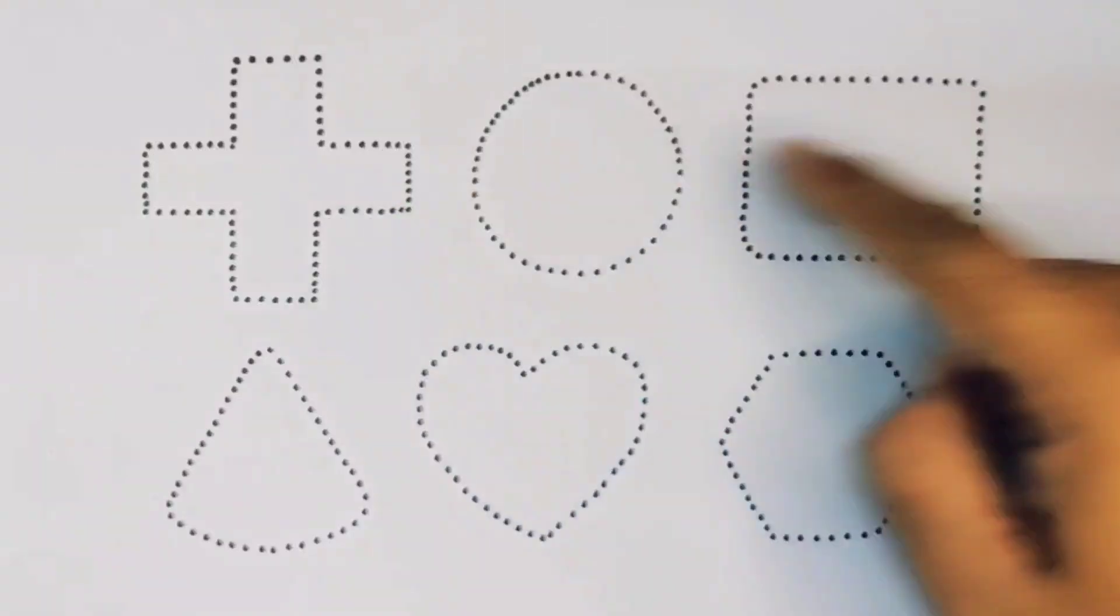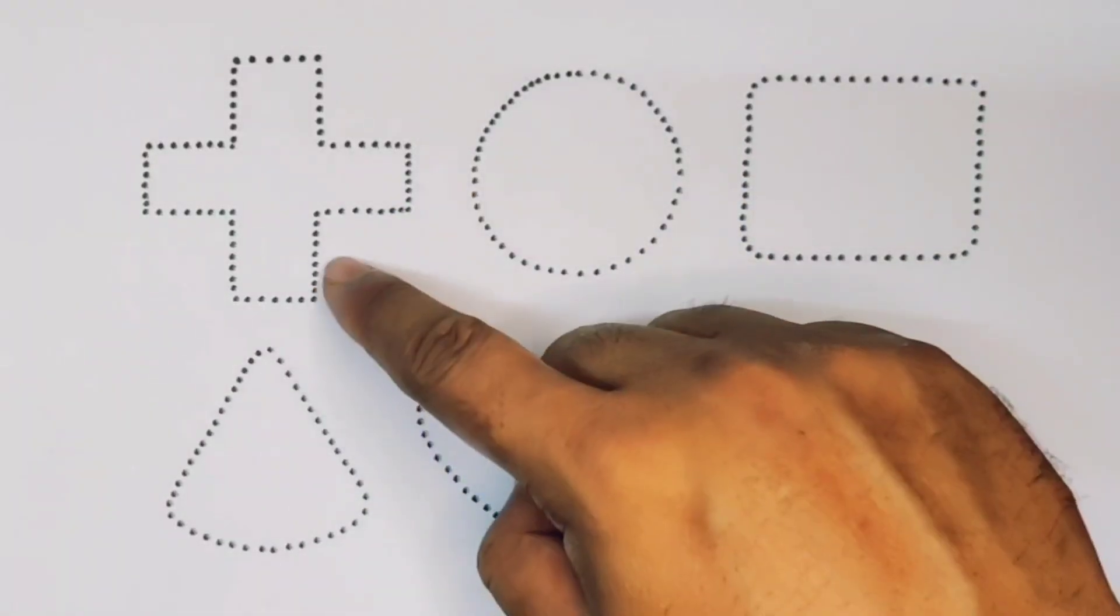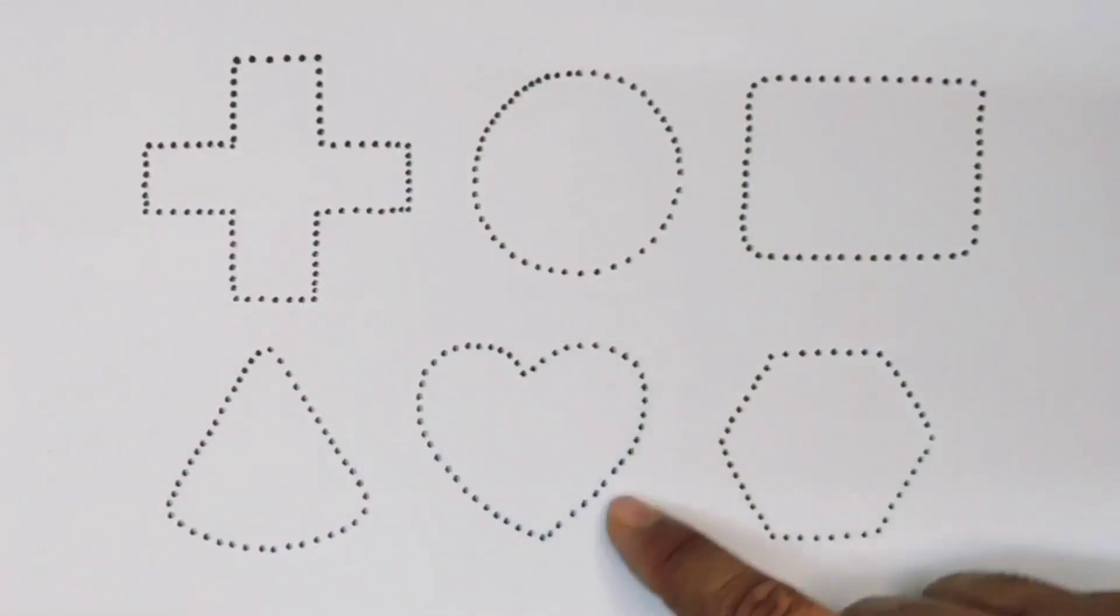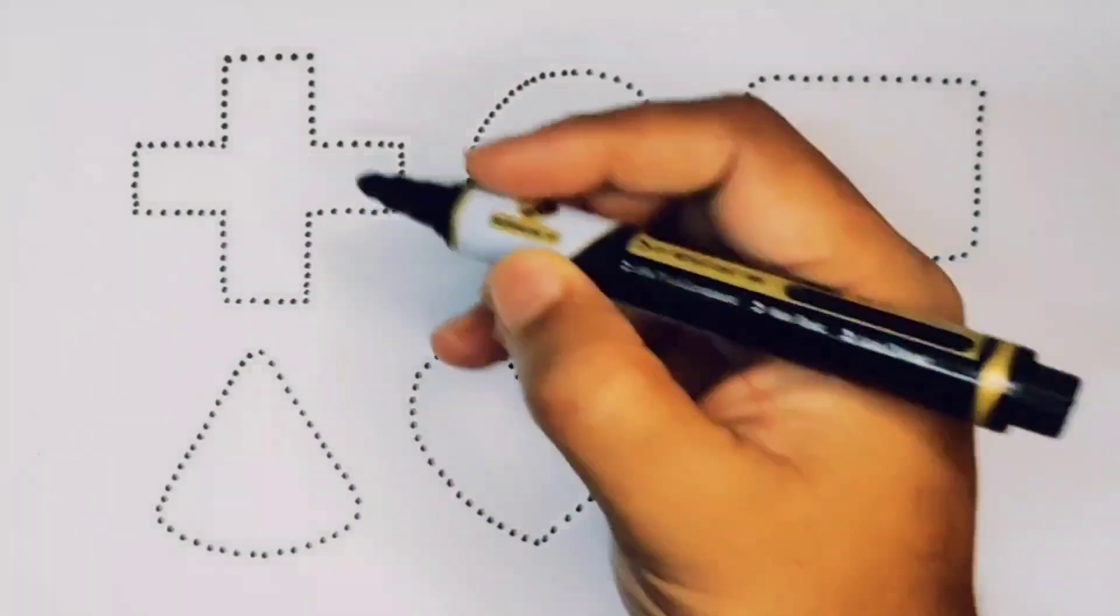Now let's learn the 2D shapes: cross, circle, rectangle, triangle, heart, and hexagon. First we are going to draw the shapes.